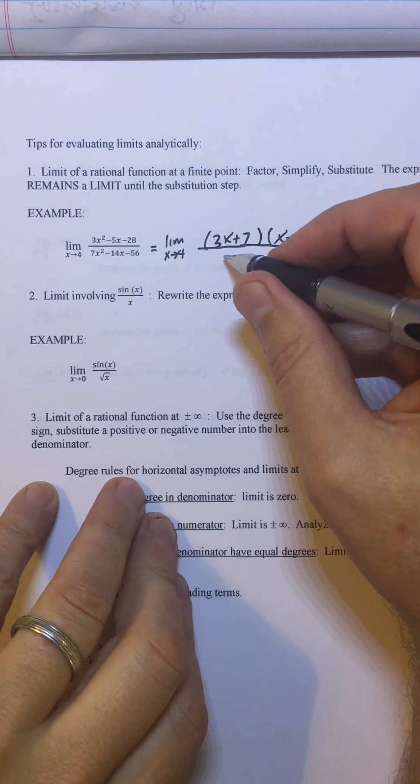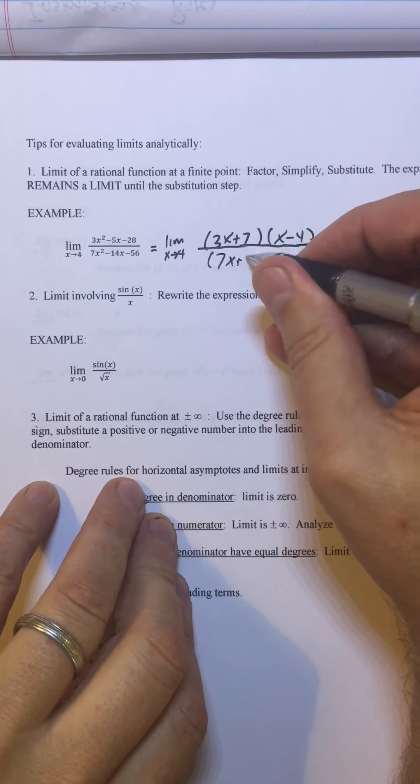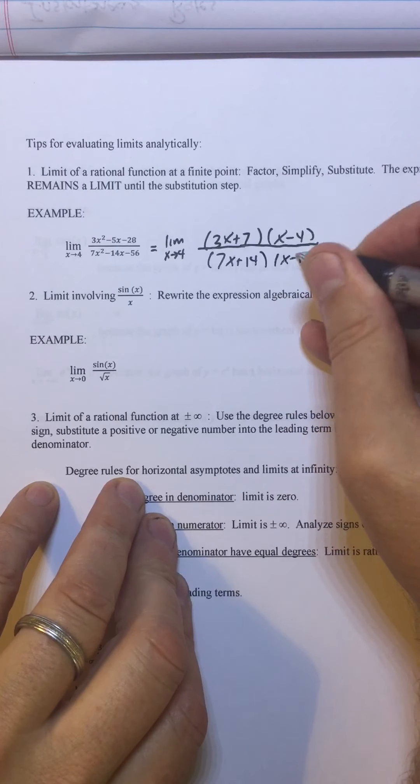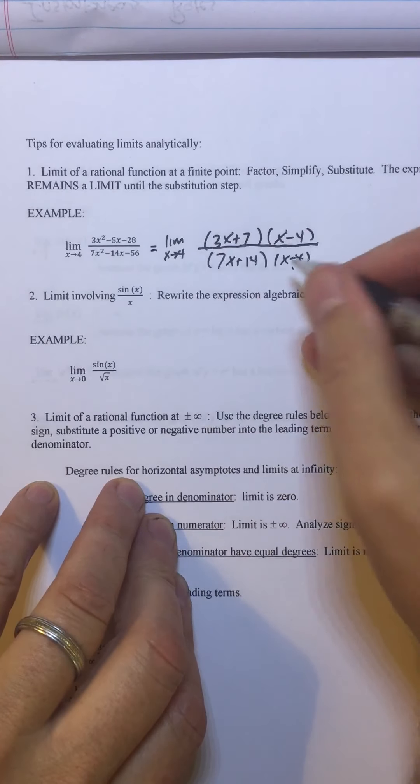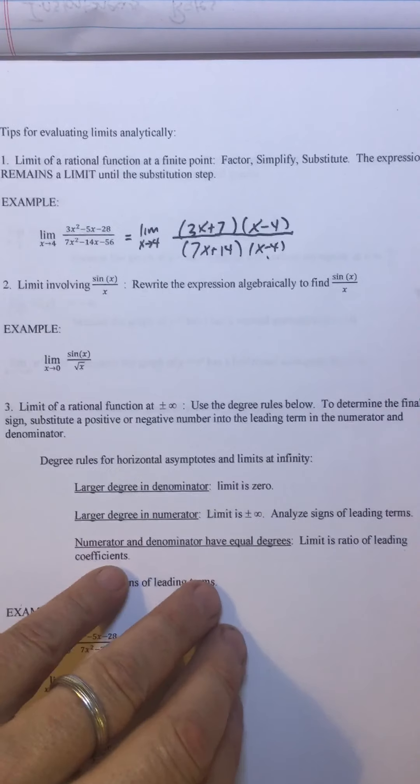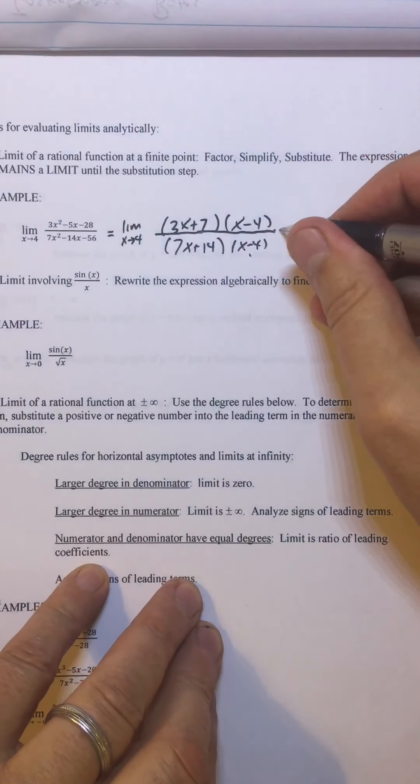I also could have used, by the way, there was a hint that I passed up that I could have used, which is that since there's an x minus 4 in the numerator, and it's limit as x approaches 4, one of the factors almost had to be x minus 4. Otherwise, it would be sort of a trick question.